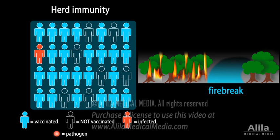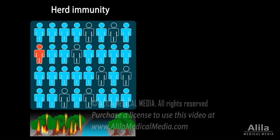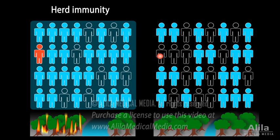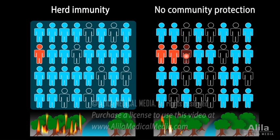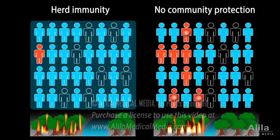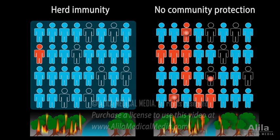Herd immunity is important because not everyone can be vaccinated. Often the very young, very old, and immunocompromised people must rely on vaccinated individuals to stop disease outbreaks. It is important to note, however, that the number of vaccinated individuals must be great enough for community protection to occur, just like a firebreak must be large enough to stop a fire.